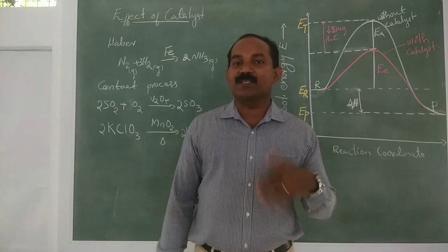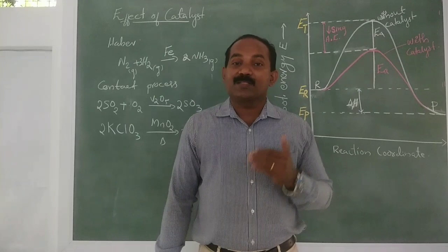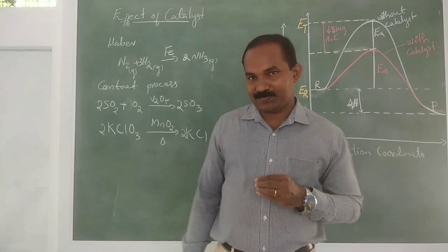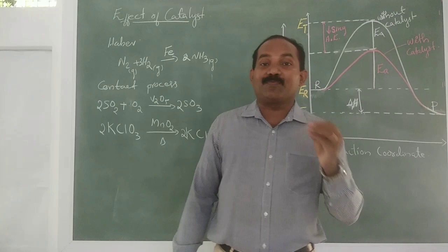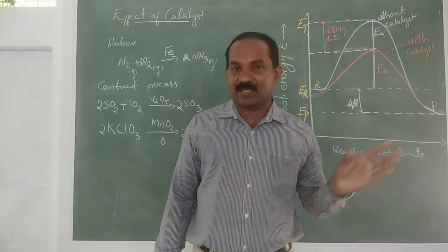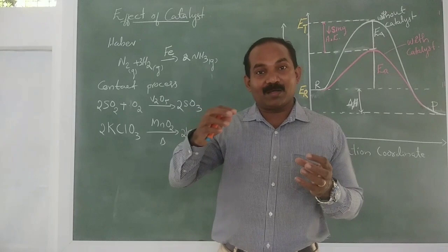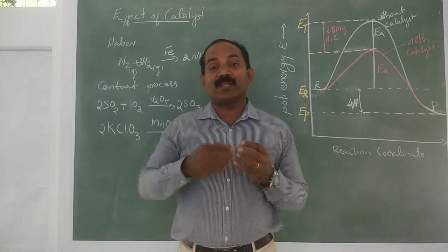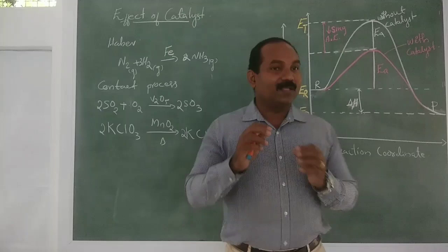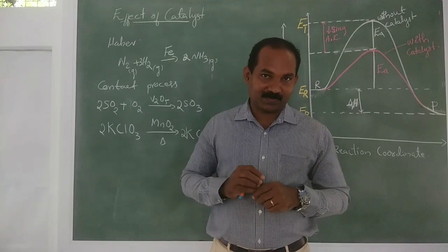In this chapter, we are discussing the effect of catalysts on the rate of the reaction. The action of catalysts is explained by the formation of an activation complex or an intermediate, as we discussed in the last class. The activation complex is a temporary state, sometimes also known as the transition state.